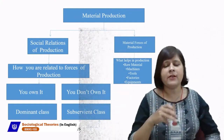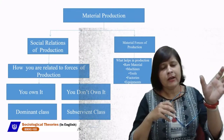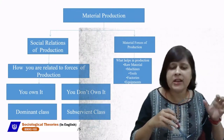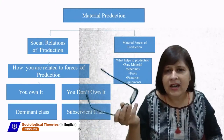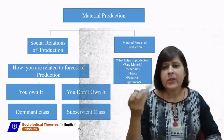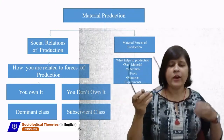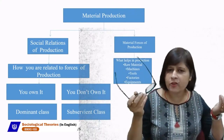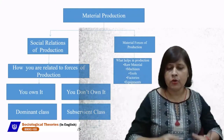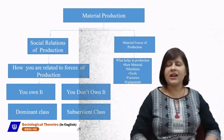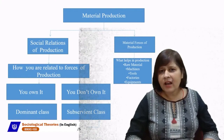This group is known as the subservient class or dominated class. This is responsible for the origin of classes. Those who own the material forces of production form one class — the dominant class. And those who don't own the means of production form the subservient or dominated class. Those who don't own are known as 'have-nots,' and those who own are the dominant class or 'haves.'